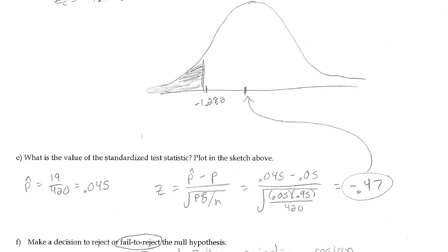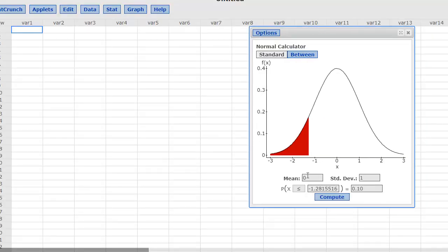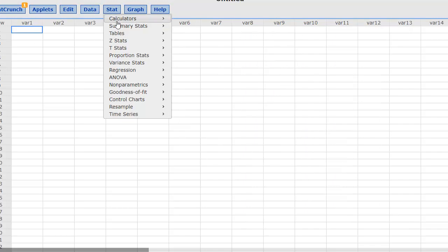Finishing this problem off in StatCrunch, we've already found the rejection region. And to do the hypothesis test, we're going to choose the proportion stat.